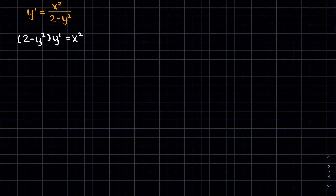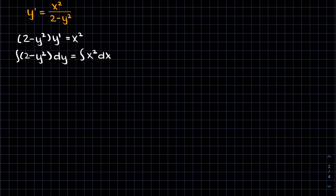So now we can just integrate both sides with respect to x. We'll get 2 minus y squared — recall that y prime is dy/dx — and if we integrate both sides with respect to x, the dx's will cancel and we'll just be left with dy and integrate x squared dx. Now we can just take the integral and this will be 2y minus y³/3 equals x³/3 plus some constant c1.